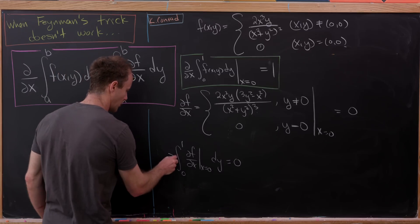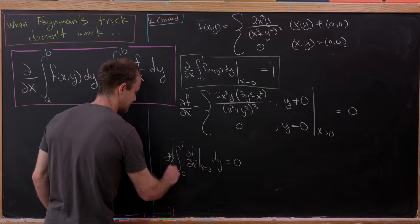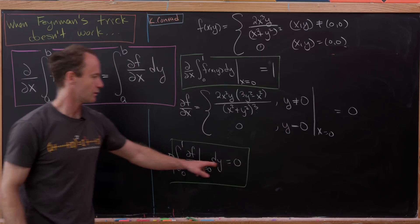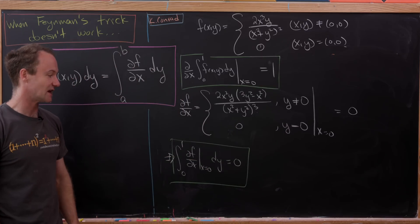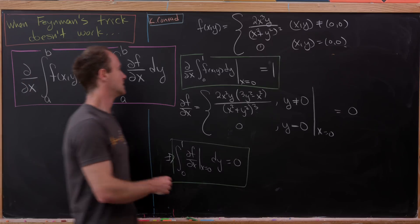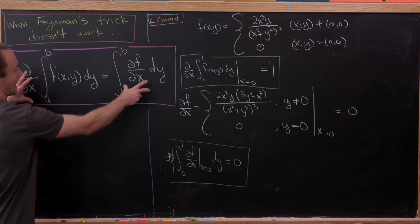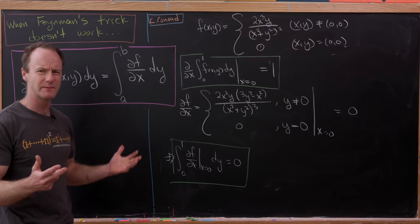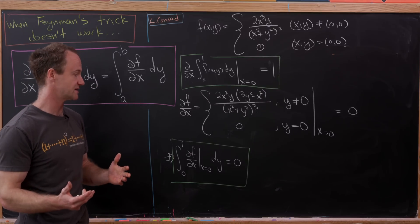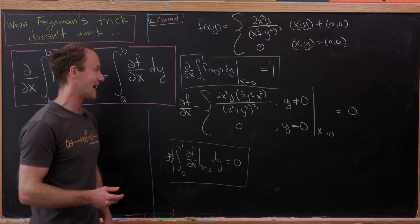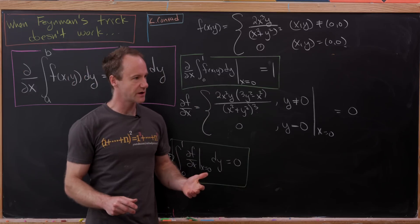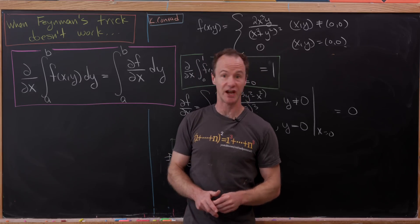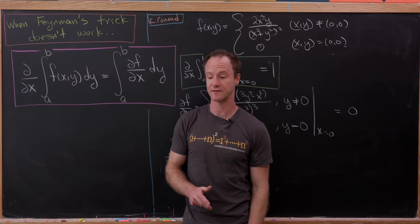So why is that a problem? Well, let's compare these two green boxes. And 0 is most definitely not equal to 1. So that means we do not have equality of these two objects everywhere. Perhaps we have equality most places, but we don't have equality at x equals 0. So since we don't have equality at x equals 0, it is not legitimate to exchange the order of integration and differentiation.